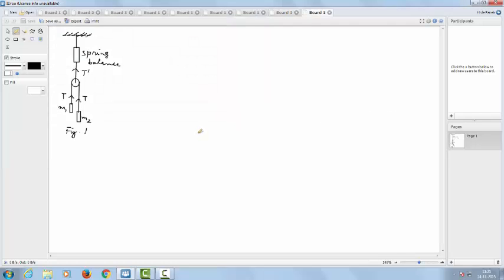In the figure, a pulley of negligible weight is suspended by a spring balance. Weights of 7 kg and 9 kg respectively are attached to the opposite ends of a string passing over the pulley and move with acceleration because of gravity. During their motion, what will be the reading in the spring balance? That is the question.